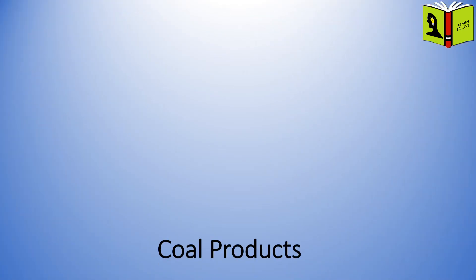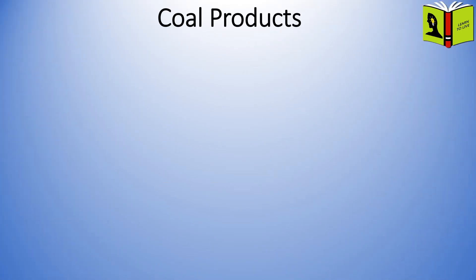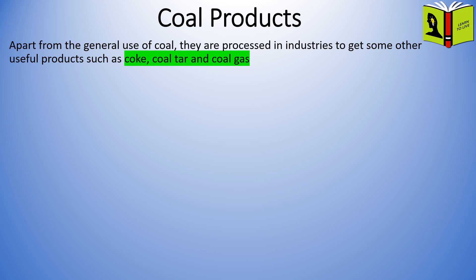Let us learn about the products from coal. Apart from the general use of coal, they are processed in industries to get other useful products, such as coke, coal tar, and coal gas.